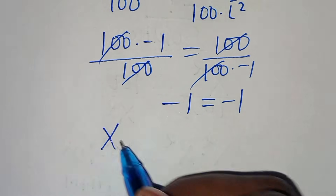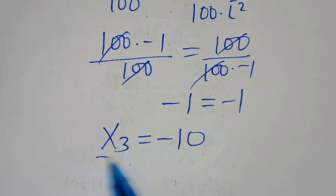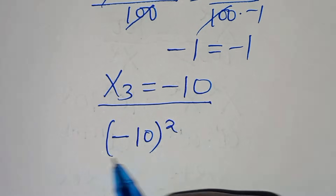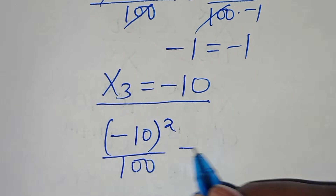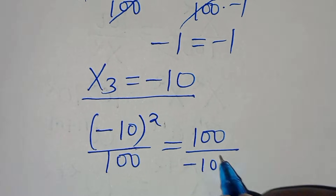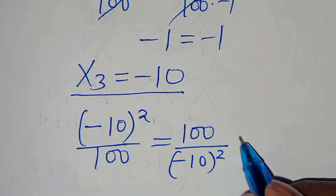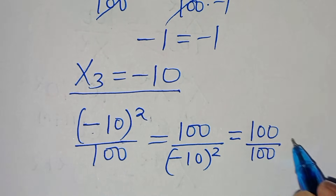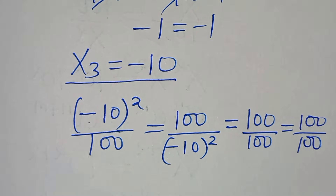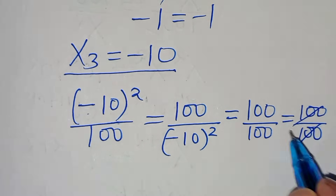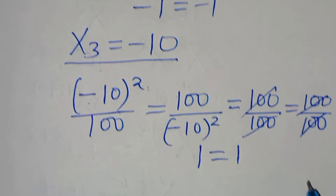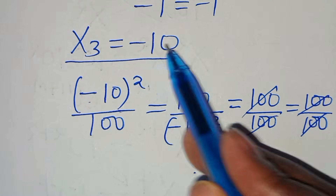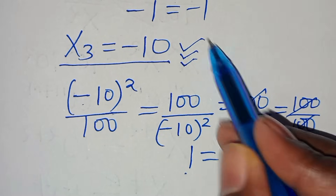Let's take x₃, which is equal to minus 10. This means we have minus 10 raised to the power of 2 divided by 100, this is equal to 100 over minus 10 to the power of 2. Minus 10 squared is 100, so we have 100 divided by 100 equals 100 over 100, which simplifies to 1 equals 1. The left hand side equals the right hand side, affirming that x₃ equals minus 10 also satisfies the equation.